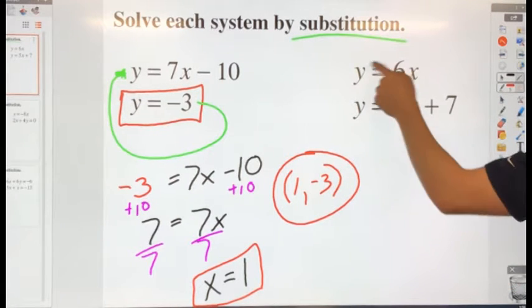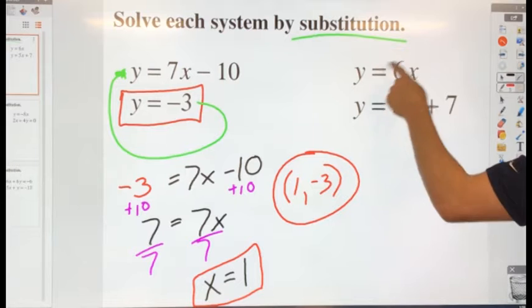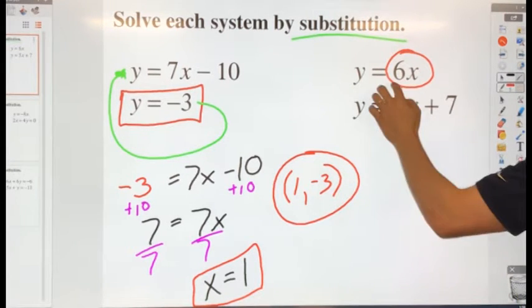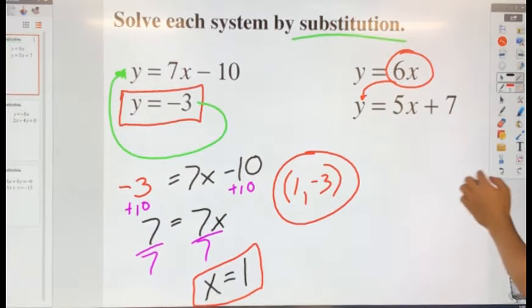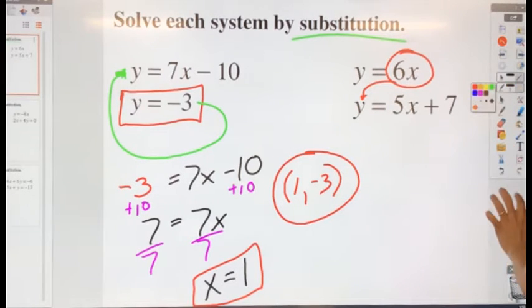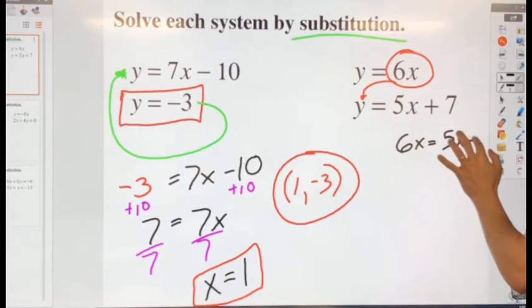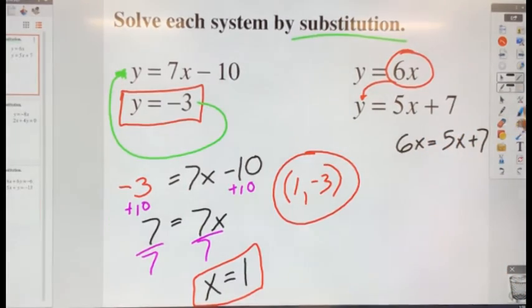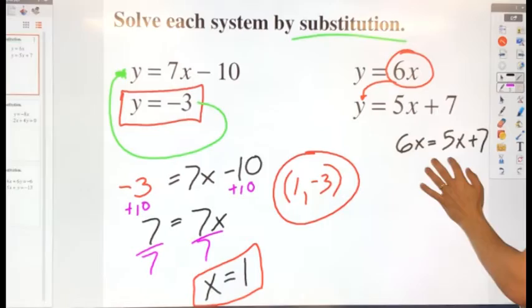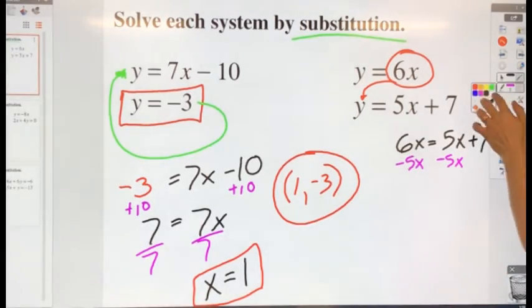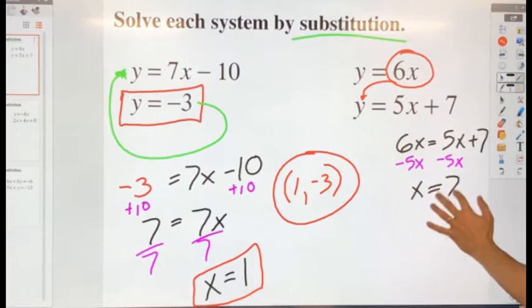It doesn't matter which one you pick, but it looks like my best option here is to solve for x first because I want to take this value of y and plug it into this one. So that's going to give me 6x equals 5x plus 7 that I can solve for x. So let me subtract 5x on both sides, and that wasn't too bad. That gives me x equals 7.